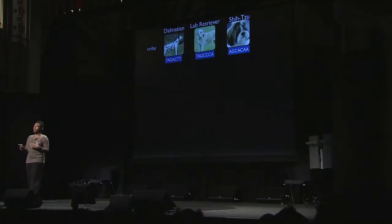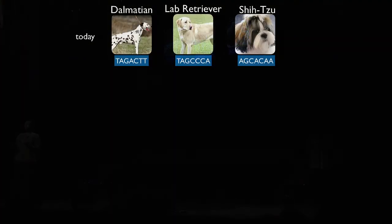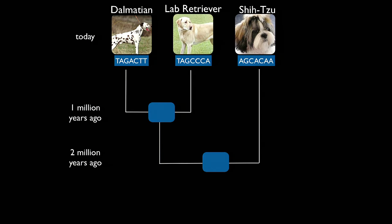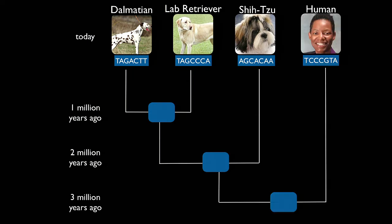I want to show how we can look at a particular puzzle piece and think about what it means to be a family tree. Here I'm showing three breeds of domesticated dogs with a snippet of their DNA. This family tree shows how an ancestor from two million years ago gave rise to these domesticated dogs. And of course humans are in the picture too — three million years ago we had some ancestor that gave rise to both domesticated dogs and humans.